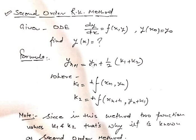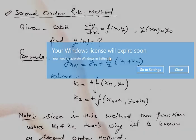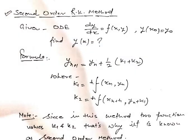The basic formula for second order is: Yₙ₊₁ = Yₙ + (1/2)(K1 + K2). Here K1 and K2 are two functional values — that's why it is called the second order Runge-Kutta method. K1 = H·f(xₙ, yₙ), and K2 = H·f(xₙ + H, yₙ + K1). First calculate K1 and K2, then substitute into the formula to get successive approximations.